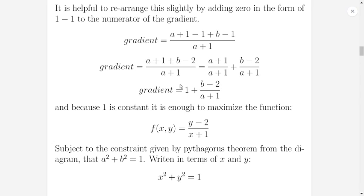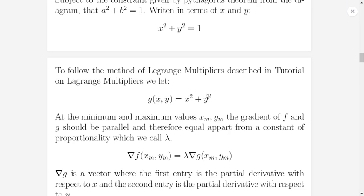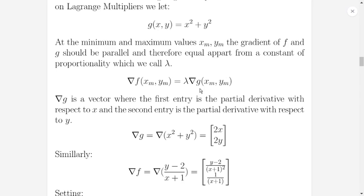Because 1 is a constant, if we're looking to maximise it, we don't need to worry about that. So we're going to use Lagrange multipliers, and we want to maximise the function — calling it in terms of X and Y — which is Y minus 2 over X plus 1. We've also got the constraint from Pythagoras' theorem that X squared plus Y squared is equal to 1. We let G of X, Y be the constraint, and then we take the gradient of both functions and note that they should be proportional to each other, with a possible lambda scalar.